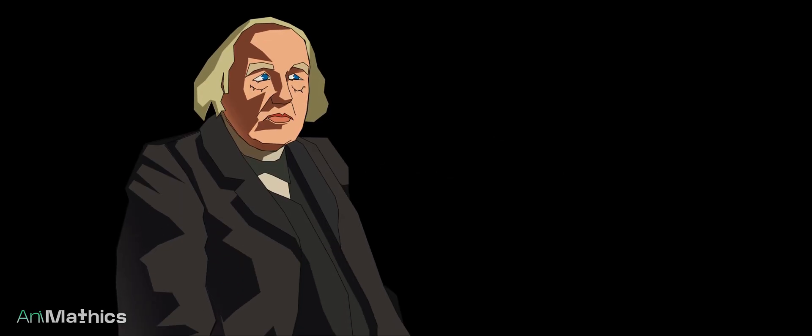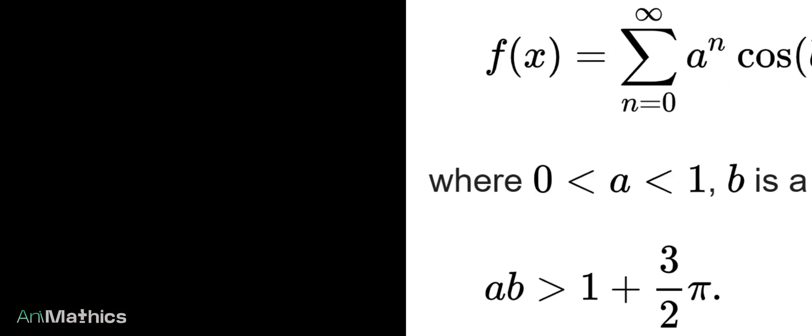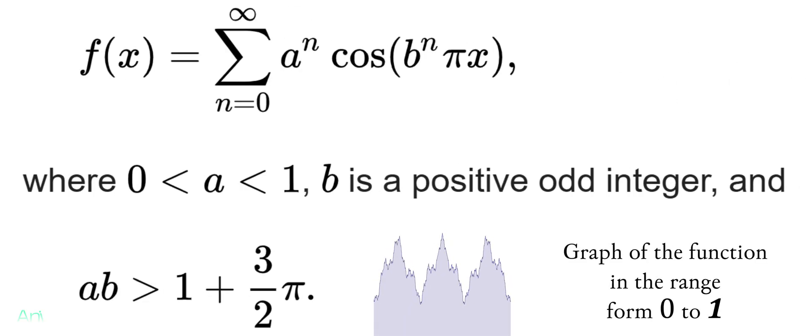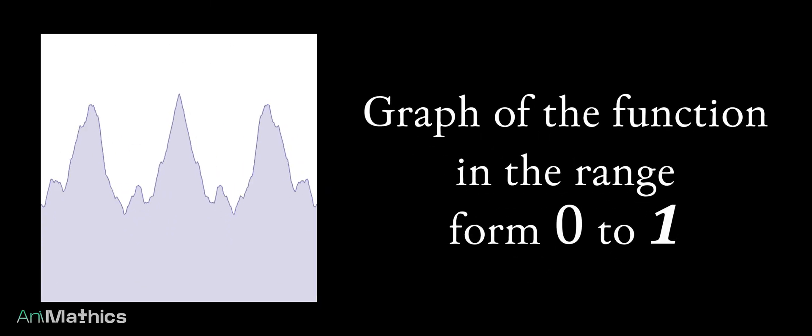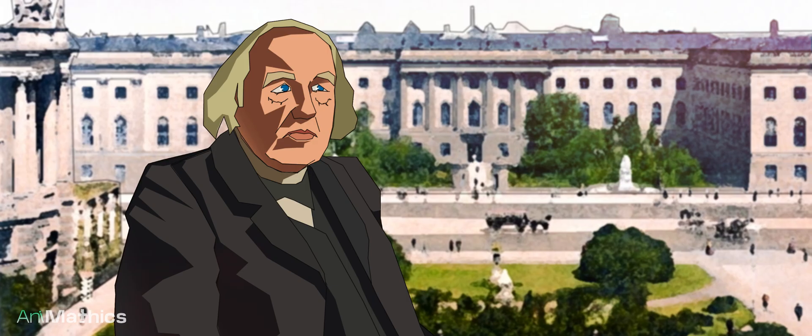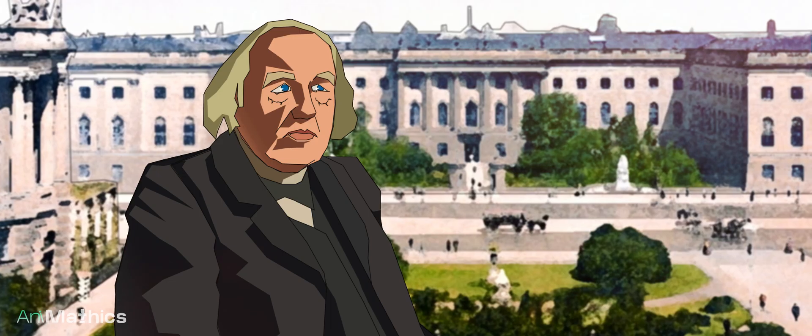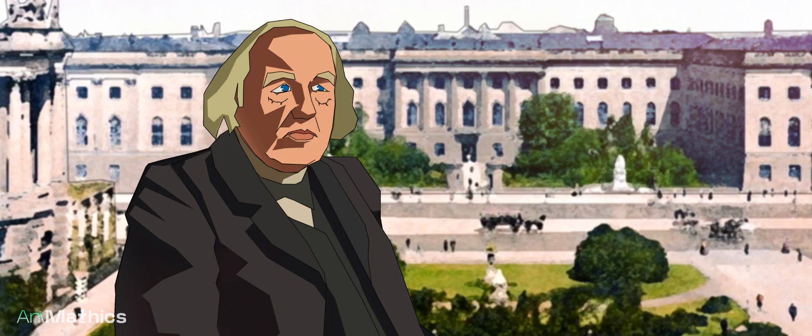This function became known as the Weierstrass function, and it is expanded as shown on the screen. Only the epsilon-delta method could prove that this function is continuous but not differentiable.